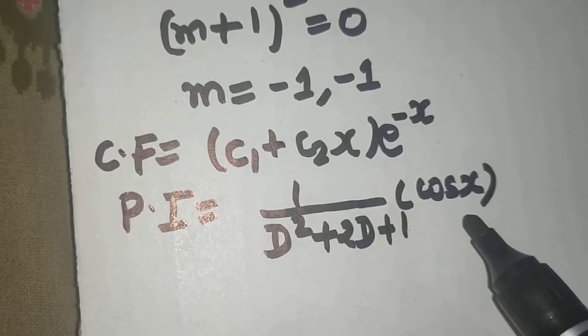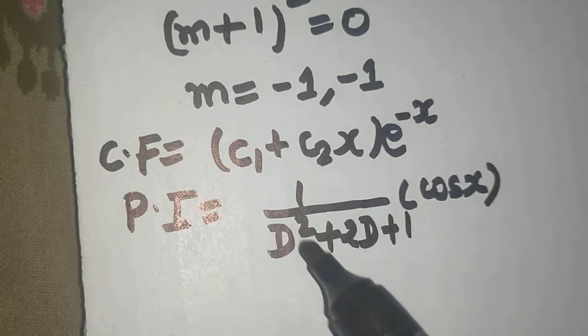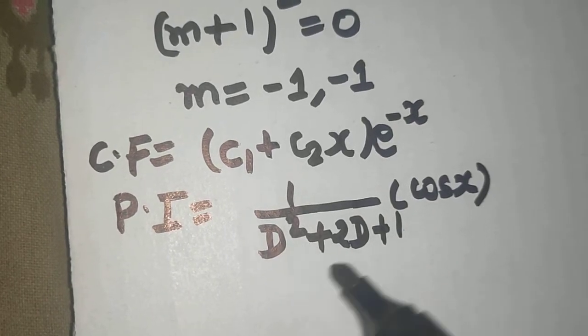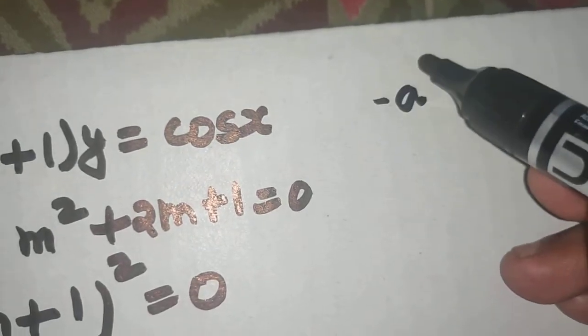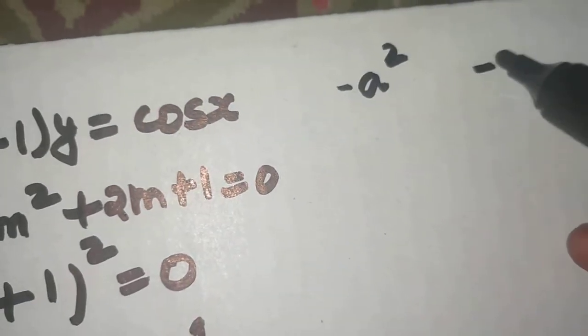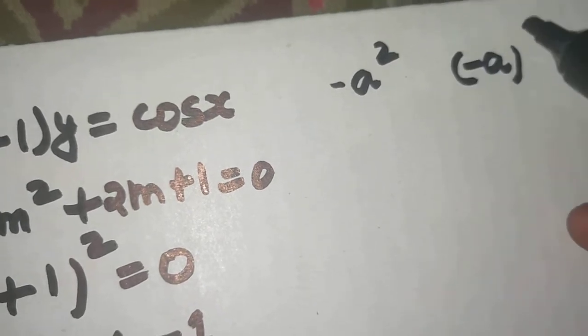Now whenever you have cos ax or sine ax, what we do, we just replace this d square by minus of a square. Now concentrate here, we replace by minus of a square, but not by minus a whole square.